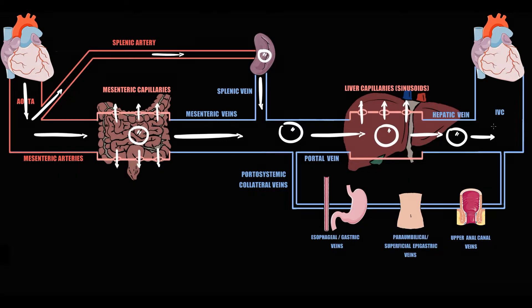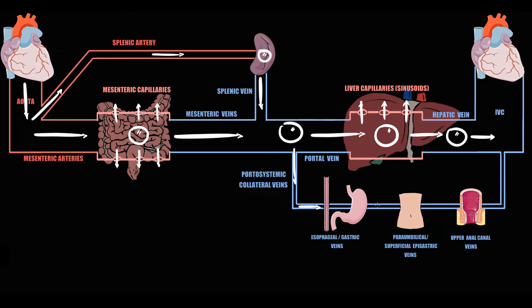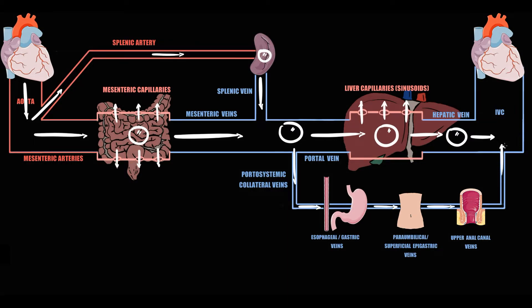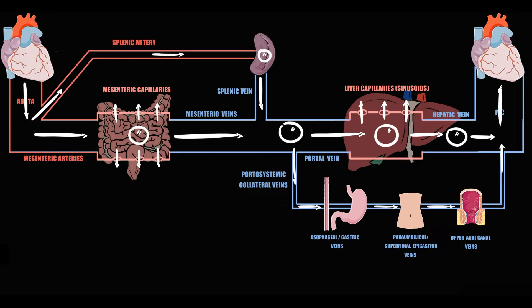We also have to know that this system contains additional vessels remaining from embryogenesis, called portosystemic collateral blood vessels. During embryogenesis these vessels were crucial. They provided flow to esophageal and gastric veins, to paraumbilical and superficial epigastric veins located on the anterior abdominal wall, and to upper anal canal veins, from which blood drains into the inferior vena cava. In normal adult conditions, portosystemic collateral vessels are practically unused because the portal vein provides the main flow. Blood from the inferior vena cava goes to the right atrium, right ventricle, through pulmonary circulation, into the left atrium and left ventricle, and the cycle repeats.